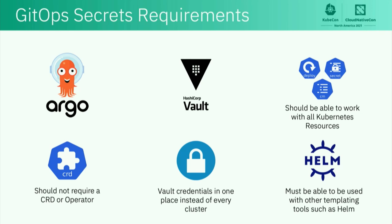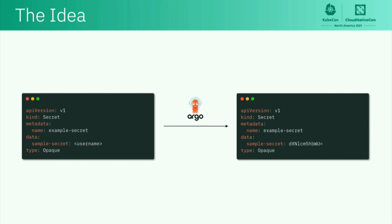We wanted to use it with Helm and other tools. The idea was simple: we wanted a YAML resource in a Git repository where, where the value would normally go, we'd template it out with a placeholder syntax — something we had used on a legacy system. We wanted then Argo CD to pull this, do something, apply it in a cluster, and we'd get our value when it applies. So: YAML in Git with a placeholder, through Argo CD, and in the cluster we get our secret.